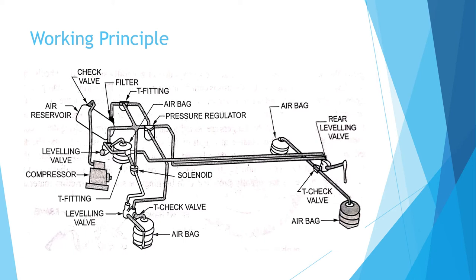The air is filled into the low air bag, which has been compressed by added weight, by the leveling valve — thus bringing it level with the other bags. The air is quickly released by the leveling valve when the load is decreased from the air bag, to lower it to the proper level. This is the working principle of the air suspension system.